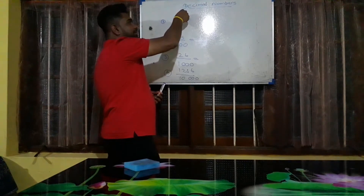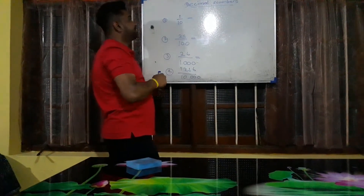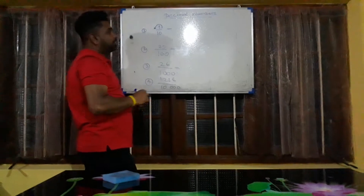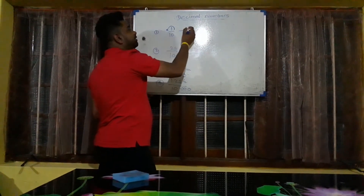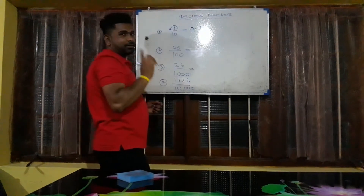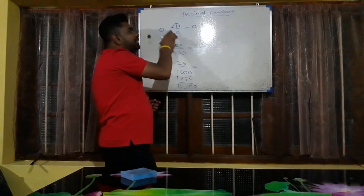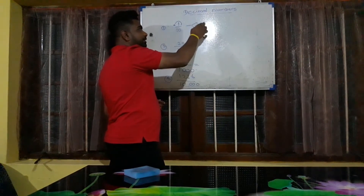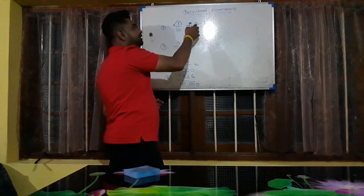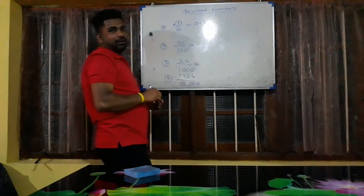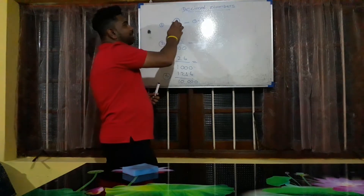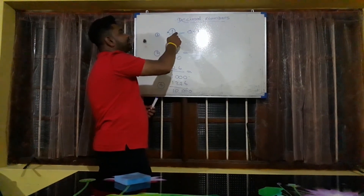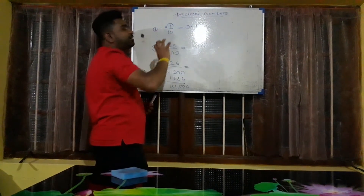For 1 upon 10: in 10 there is one zero, so the decimal point of the numerator jumps one place to the front. So 1 upon 10 we can write as decimal 0.1. For 25 upon 100: in 100 there are two zeros, so the decimal point jumps two places. We can write this as 0.25, meaning there are two decimal places.